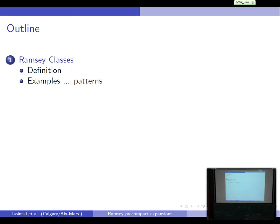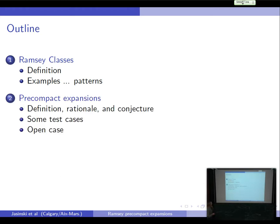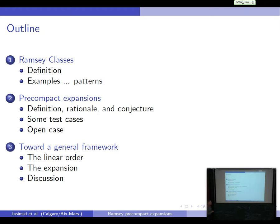So I want to give some examples of Ramsey classes, just so that you can get a feel for patterns of what's happening — that's what we're after. Then we try to essentially formalize what we're trying to do: take some classes of structures and see how we can expand them to Ramsey classes. So that's the precompact expansion. And then we'll have a short discussion and try to explain what we are doing.